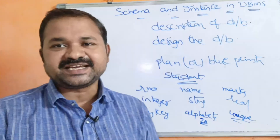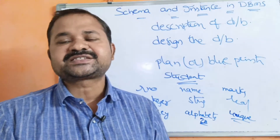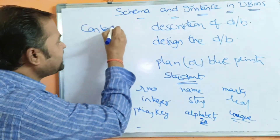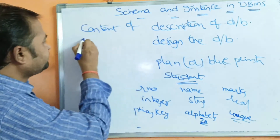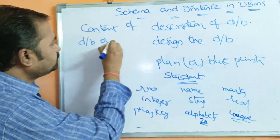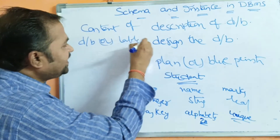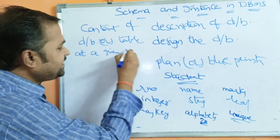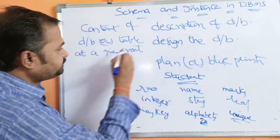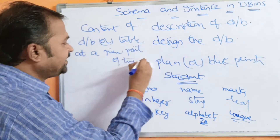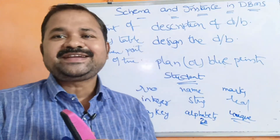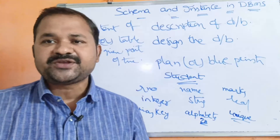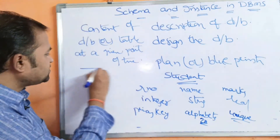Now let us see what is instance. Instance means the content of the database or table at a given point of time. So instance means the content of the database or table at a given point of time.